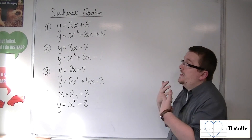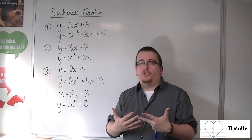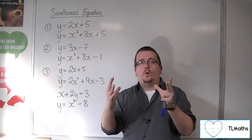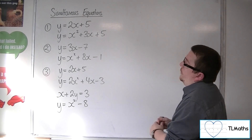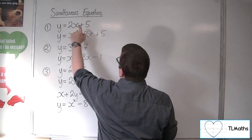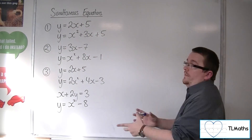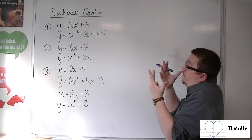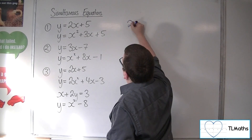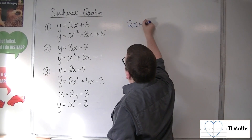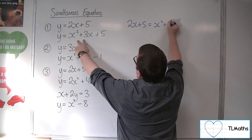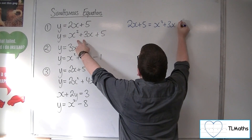What we need to do is use a form of substitution where we can put one equation equal to the other. Because if this is what y is equal to, and that is what y is equal to, then they must both be the same. So 2x plus 5 has to be the same as x squared plus 3x plus 5.